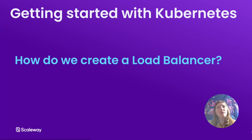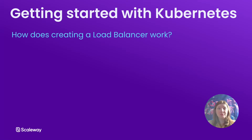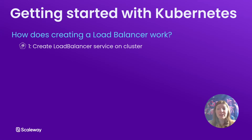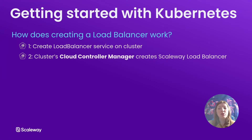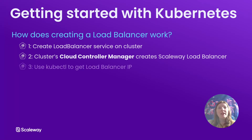So how do we create a load balancer? Honestly, it's pretty simple. First, we create the load balancer service on our cluster by connecting via kubectl and creating a YAML manifest to specify the load balancer service. Then the cluster's cloud controller manager — a component of the Kapsul control plane managed by Scaleway — creates the external Scaleway load balancer and handles all of its configuration and management. We can check our Scaleway console to confirm the load balancer has been created, then use kubectl to get its IP address.